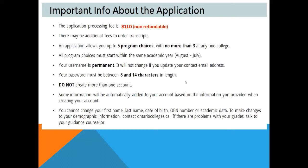Please note that until you pay, your application is not sent to your colleges of choice — it will be held at the application center until payment is confirmed, at which point your application is sent out. To review: it's $110 for five program choices; no more than three can be at any one college; all choices must start within the same academic year; and your username is permanent and cannot be changed, so choose one you will remember.